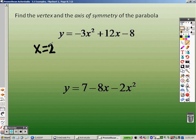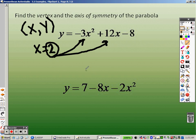Well, I'm supposed to find the vertex. The vertex is a point, which means I need to find an x and a y. So to find y, I take this 2, and I plug it in everywhere where I see an x. So this is now negative 3, 2 squared, plus 12, times 2, minus 8.